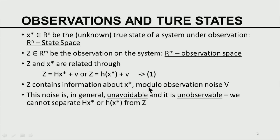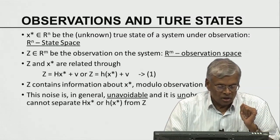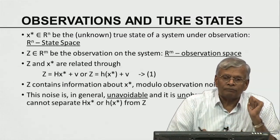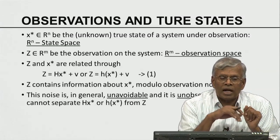This observation noise is in general unavoidable. It is also unobservable, in the sense that we will not be able to separate h(x*) from Z. If we were able to separate h(x*) from Z, we would have a filter that filters out the noise. In general, such filtering is not easy to develop because we may not know very precisely all the properties of the noise. We generally assume it is Gaussian distributed, white, and so on. If you want to know the true state of mother nature, you have to observe her evolution — observation contains the secrets about mother nature.